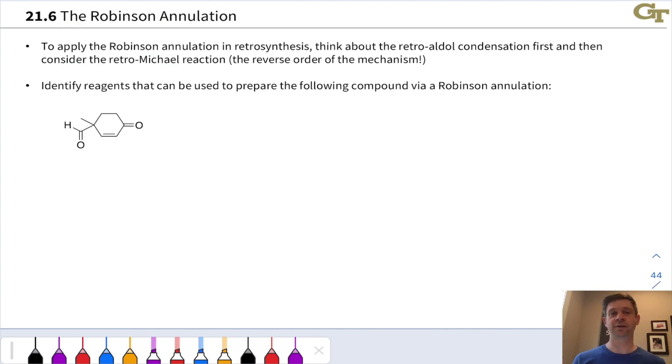Where the Robinson annulation really gets tricky is in applying it in synthesis and retrosynthesis, since it generates a lot of structural complexity in the forward direction going from acyclic starting materials to cyclic products. Working this reaction backwards is a little bit tricky, but to do this, to apply the Robinson annulation reaction in retrosynthesis, we want to look for a general structure that looks something like this.